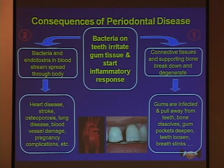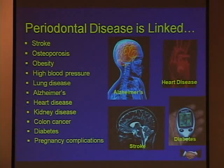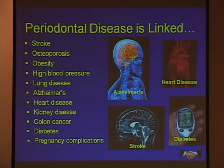We now have to talk about the systemic effects of that very same process, as bacteria and endotoxins in the bloodstream circulate through the body and affect distant organ tissues and sites. Which is why we can now say that periodontal disease is linked — and that's an important word, because we're not saying causal — but there's a strong connection between periodontal disease and a whole list of medical disorders.